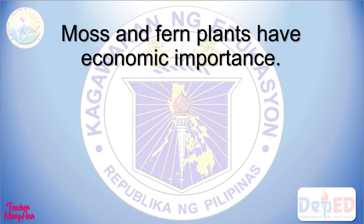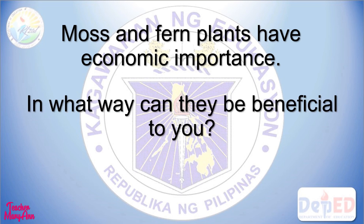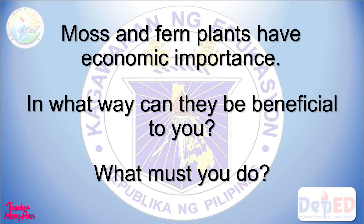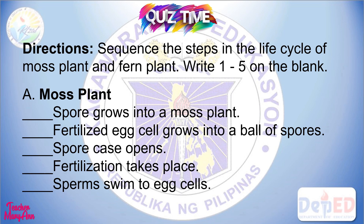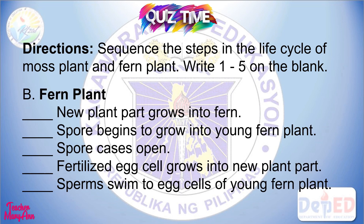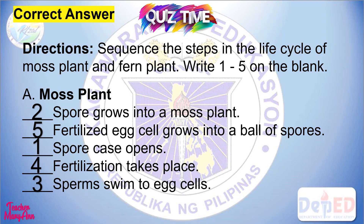Moss and fern plants have economic importance — do you agree? In what way can they be beneficial to you? Now it's time to take your quiz. Sequence the steps in the life cycle of moss plant and fern plant — write 1 to 5 on the blank. Check your work.